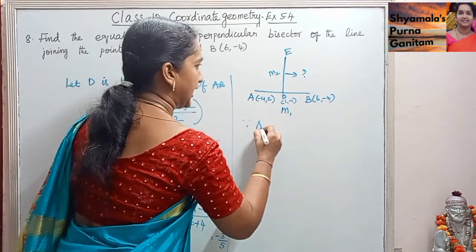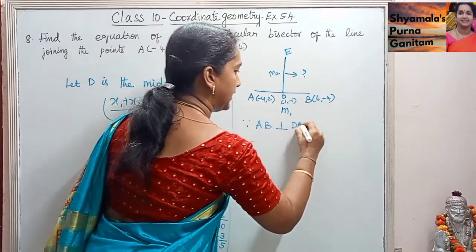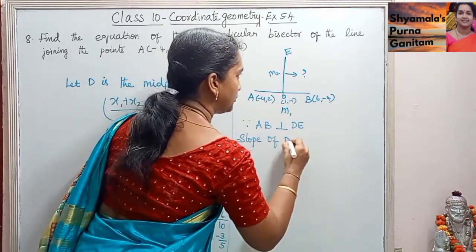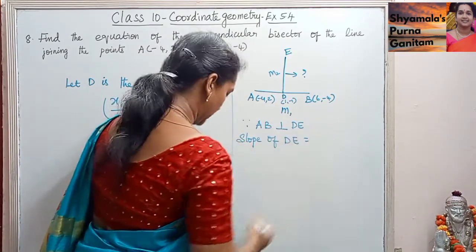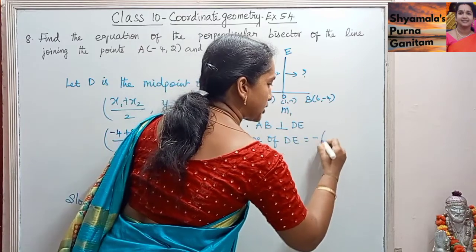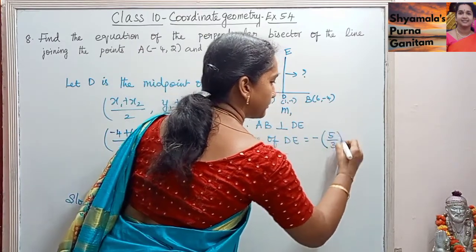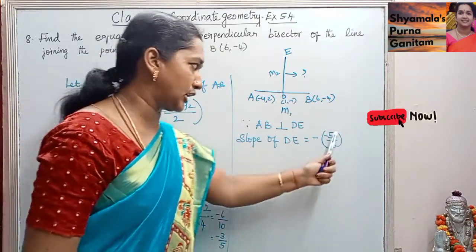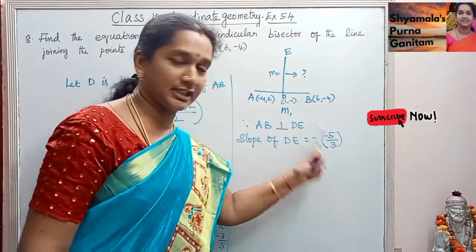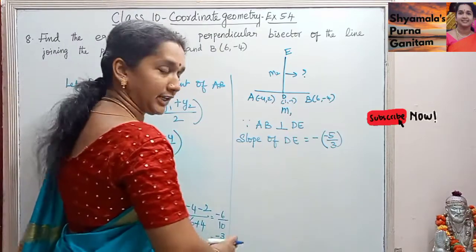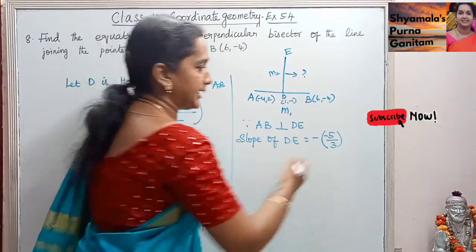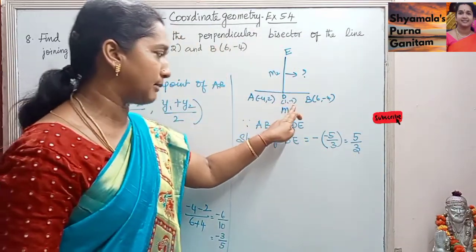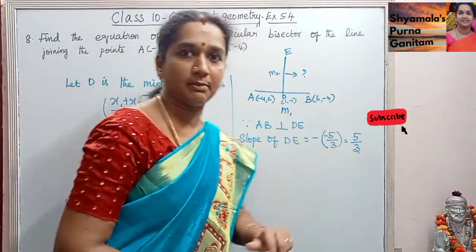Since AB is perpendicular to DE, the slope of DE will be the negative reciprocal of the slope of AB. The slope of AB is -3/5, so the reciprocal is 5/3. Since there is already a minus sign, the negative reciprocal gives us 5/3. So the slope of DE is 5/3. We now have point D(1, -1) and slope 5/3.